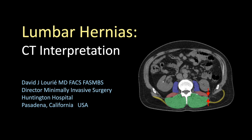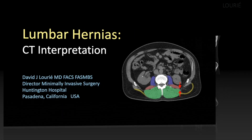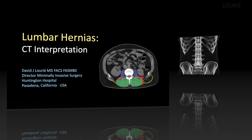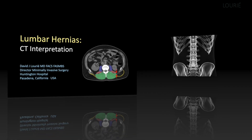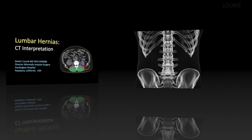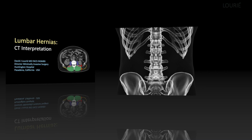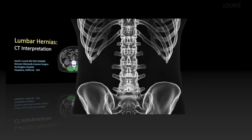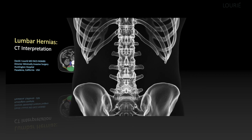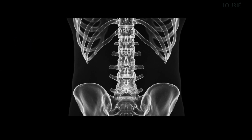This is David Lurie from Pasadena, California. In this video, I will discuss the CT interpretation of lumbar hernias. These are not ventral hernias, but rather are dorsal hernias, which occur in a very small area inferior to the 12th rib and superior to the iliac crest.